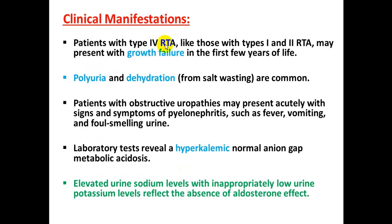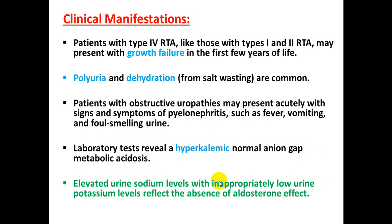Clinical manifestations of type 4 hyperkalemic RTA are similar to type 1 and type 2 RTA: growth failure in the first few years of life, polyuria, and dehydration. Patients with obstructive uropathy may present with acute signs and symptoms of pyelonephritis such as fever, vomiting, and foul-smelling urine. Laboratory tests will reveal hyperkalemic normal anion gap metabolic acidosis. Elevated urine sodium with inappropriately low urine potassium reflects the absence of aldosterone effect.